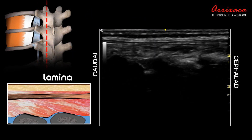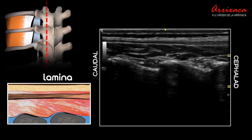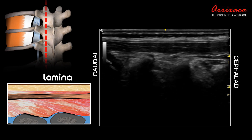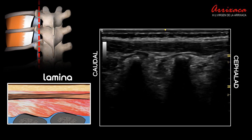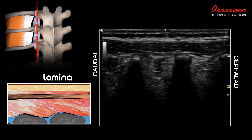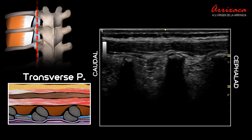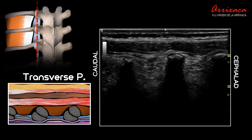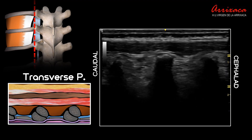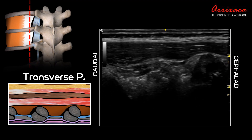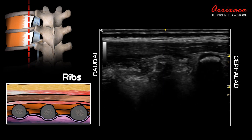In this video, you can observe the scanning from the lamina, passing through the transverse process where ossification centers are identified, and reaching the rib and back to the transverse processes.